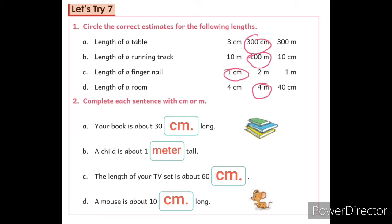Question number D: Length of a room. The answer is 4 m. So, circle on it. Do the question number 1 on your course book.